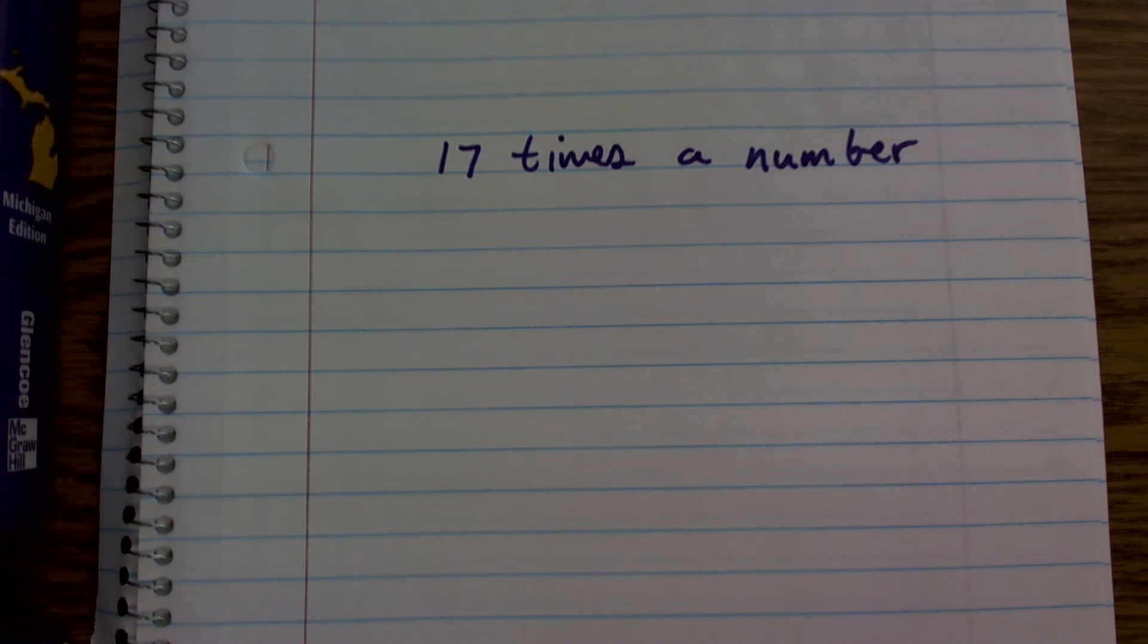So it says 17 times a number. So I know that when I'm dealing with times, multiplication is going to be my product.